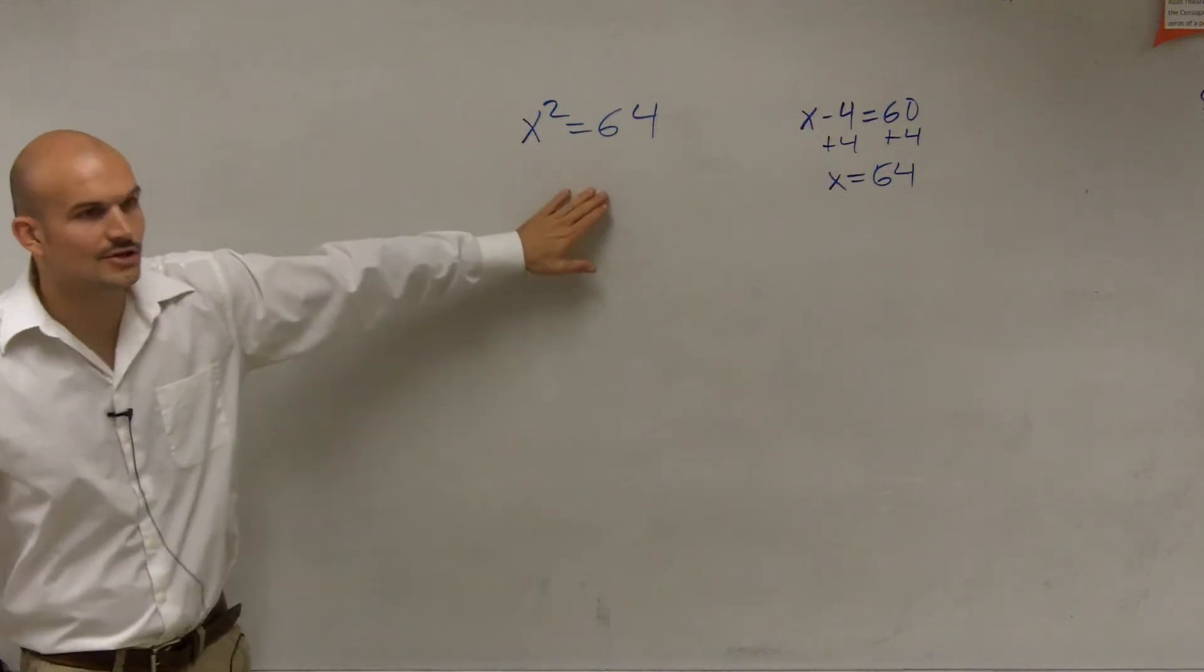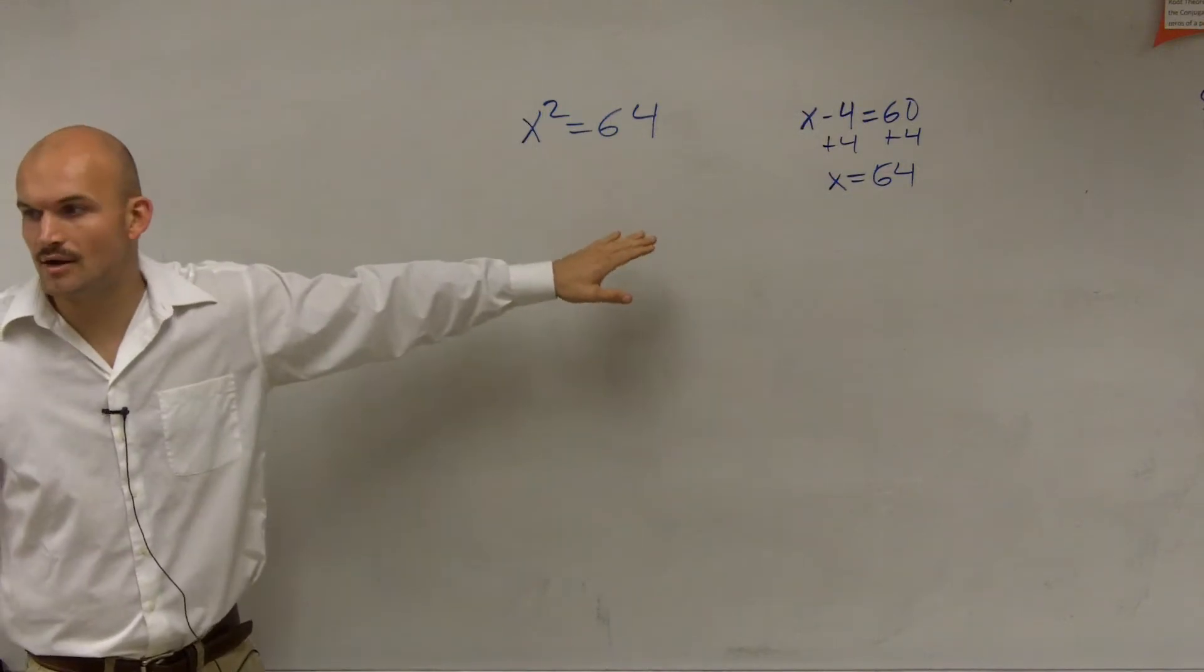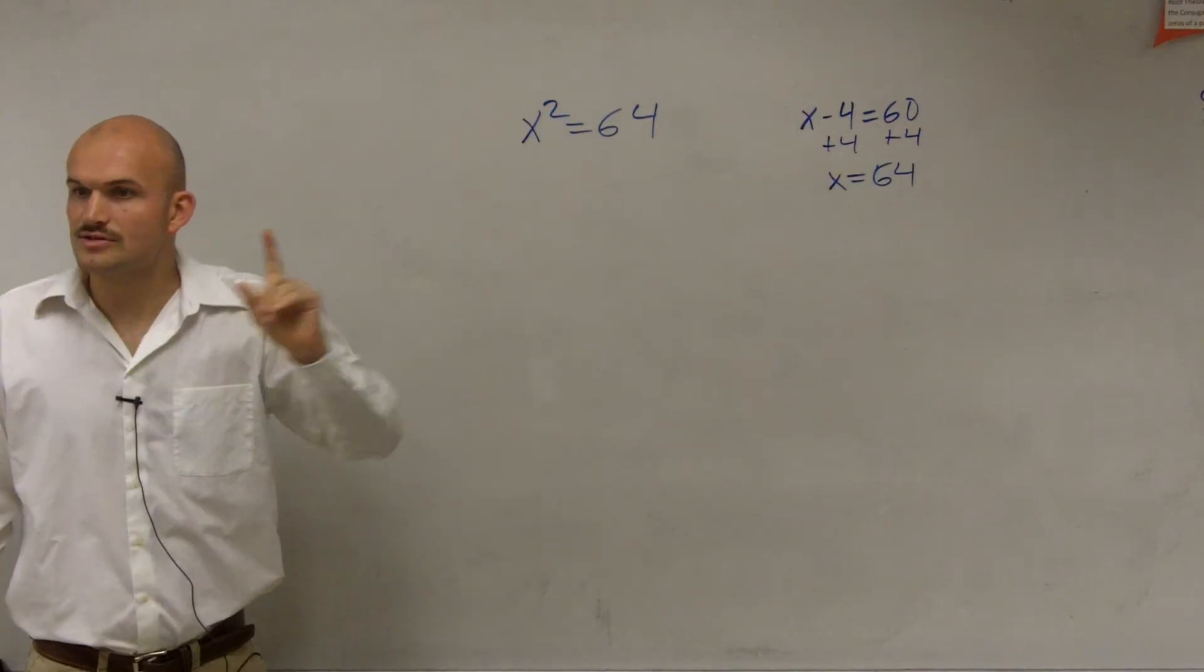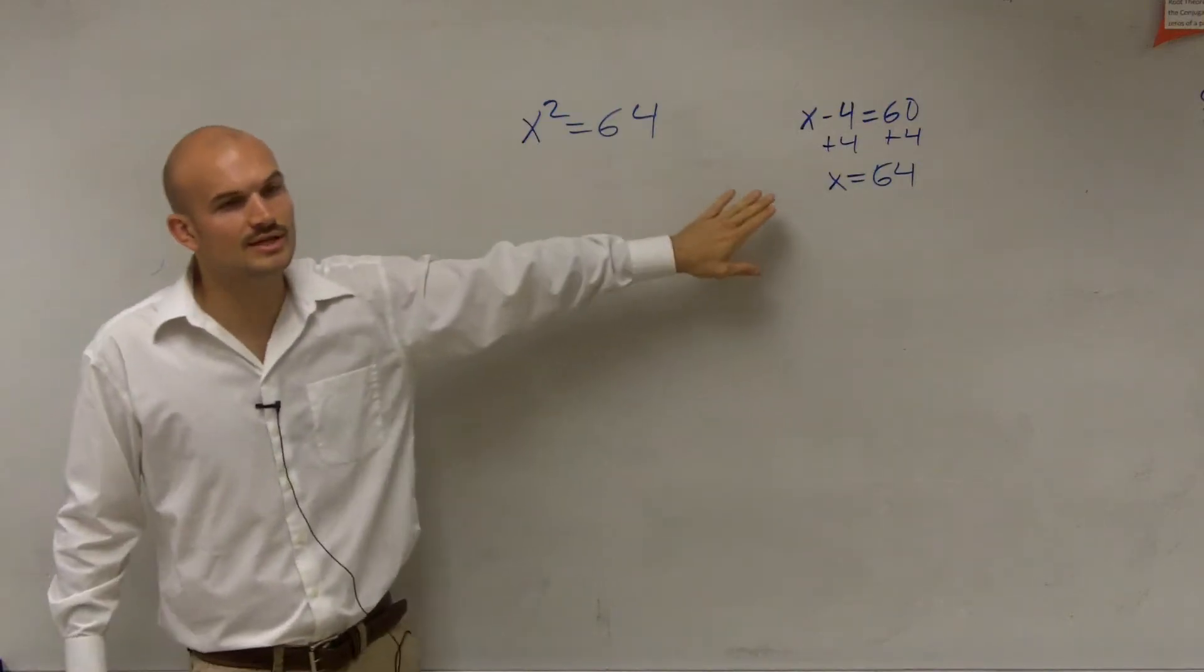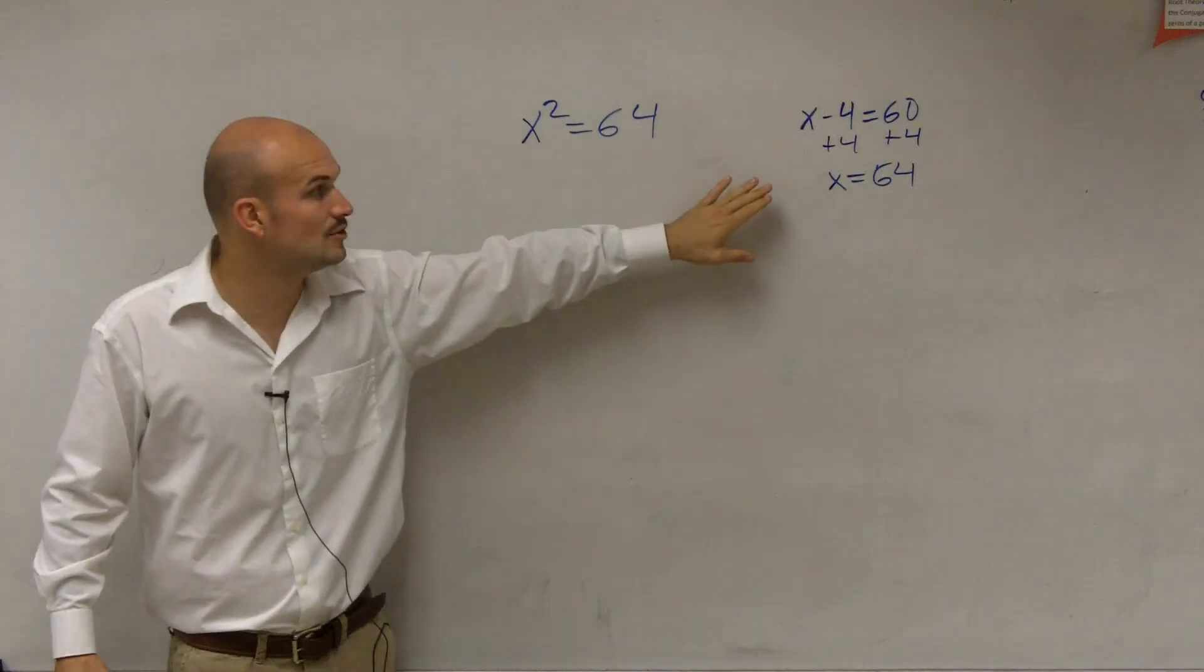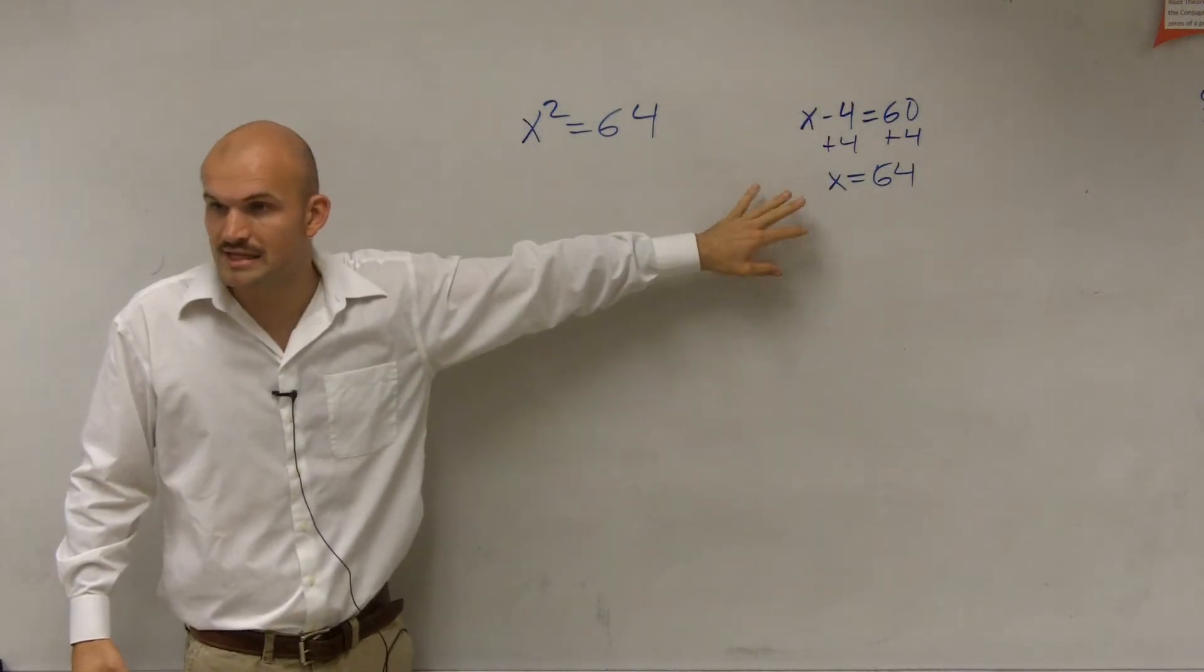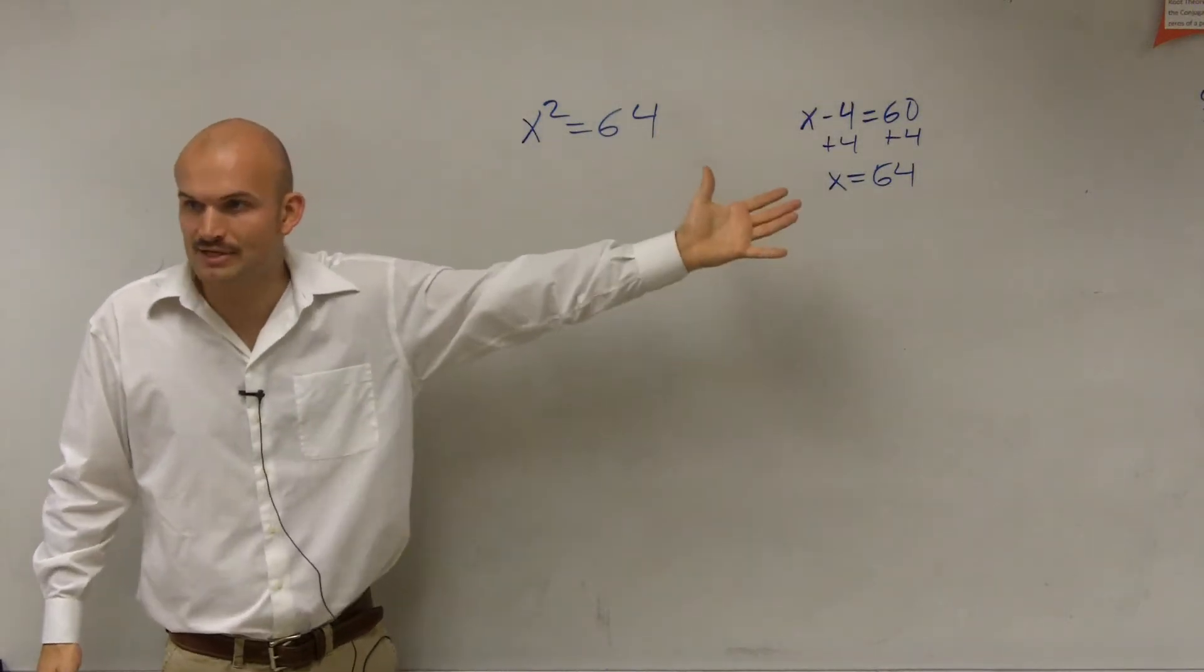Now, for this equation, you guys should notice that we only have one variable, right? So since we only have one variable, we can solve this very similar to how we solve linear equations. That means just undo what's happening to it.